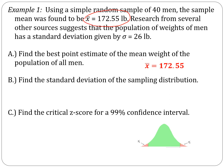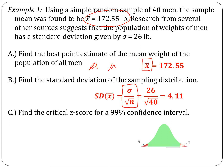X-bar is the result of a sample. If we're talking about the whole population of all men, that's mu. Find the standard deviation of the sampling distribution: sigma over radical n is the equation. The standard deviation of the population is 26 pounds — that's the standard deviation of weights of all men. Divide that by radical 40, and we get 4.11.